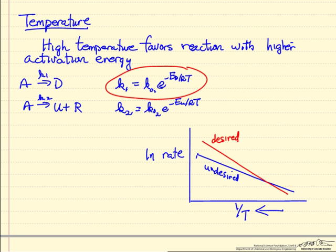I'm plotting the log of the rate versus inverse temperature, a straight line. The desired reaction slope in absolute value, since the slope is minus the activation energy divided by R, the desired reaction activation energy is higher. Therefore, its absolute value of slope is higher. So our desired reaction means that as I raise the temperature, so this is higher temperature at this end,